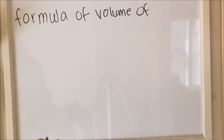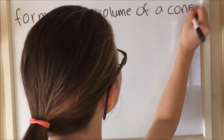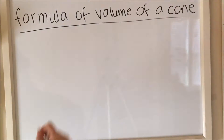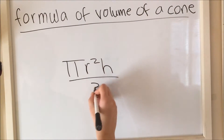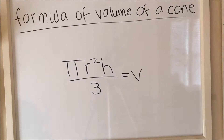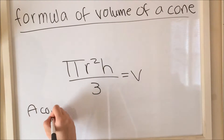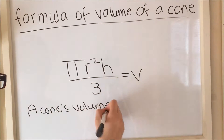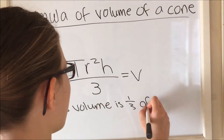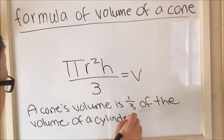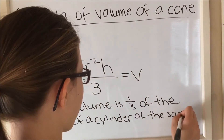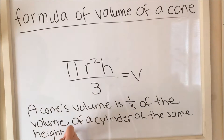This is the formula for the volume of a cone. It is basically the same as the volume of a cylinder, just divided by 3, because the volume of a cone is one-third the volume of a cylinder if they both have the same height and radius.